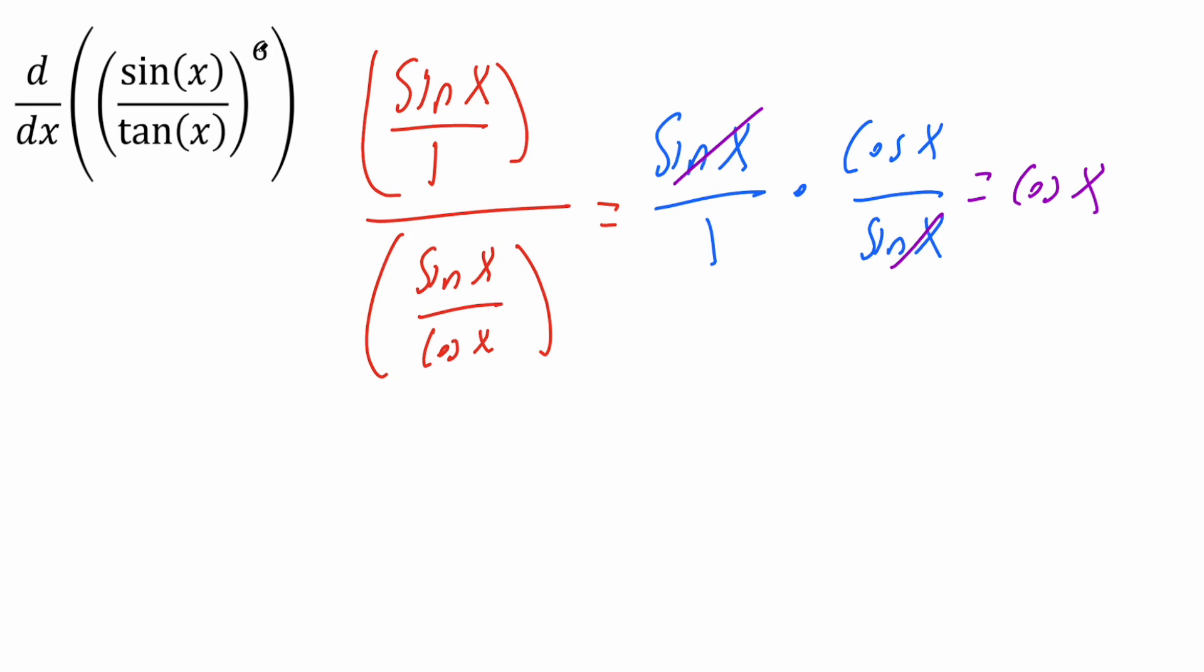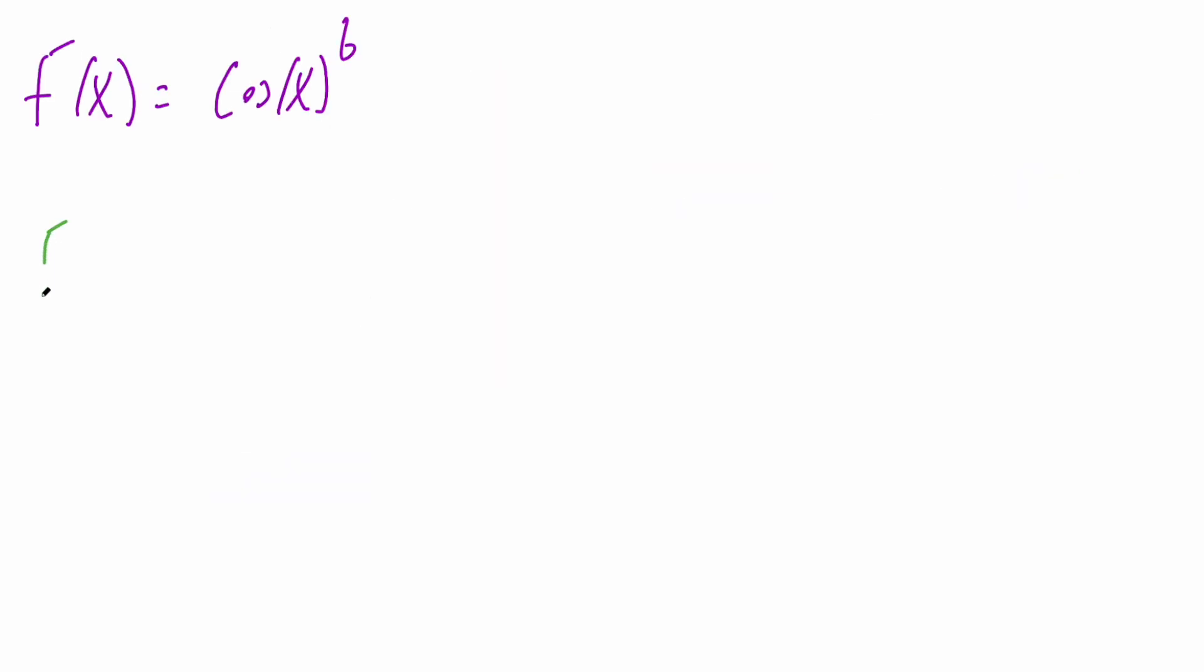So we have cosine x raised to six. Let's write this down. Really what we have is cosine x raised to six. So now we can take the derivative.